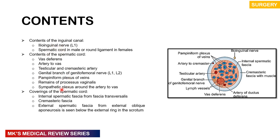The spermatic cord has coverings it acquires as the testis travels through the layers of the abdomen: the internal spermatic fascia (corresponding to the transversalis fascia), the cremasteric fascia, and the external spermatic fascia (corresponding to the external oblique aponeurosis — the fibrous tissue covering the external oblique muscle).